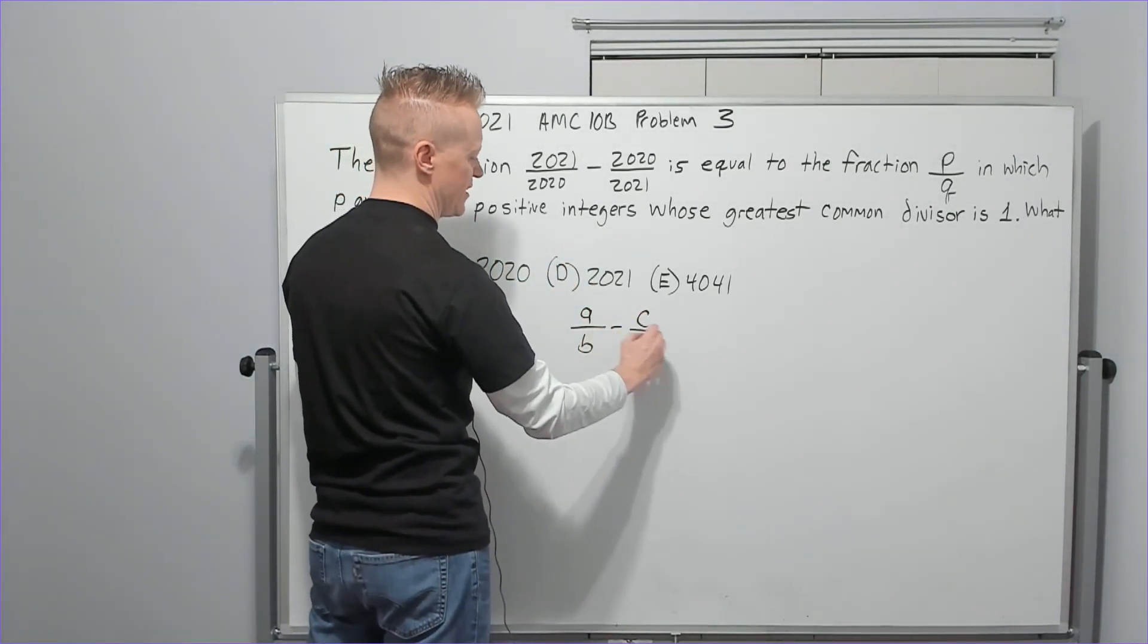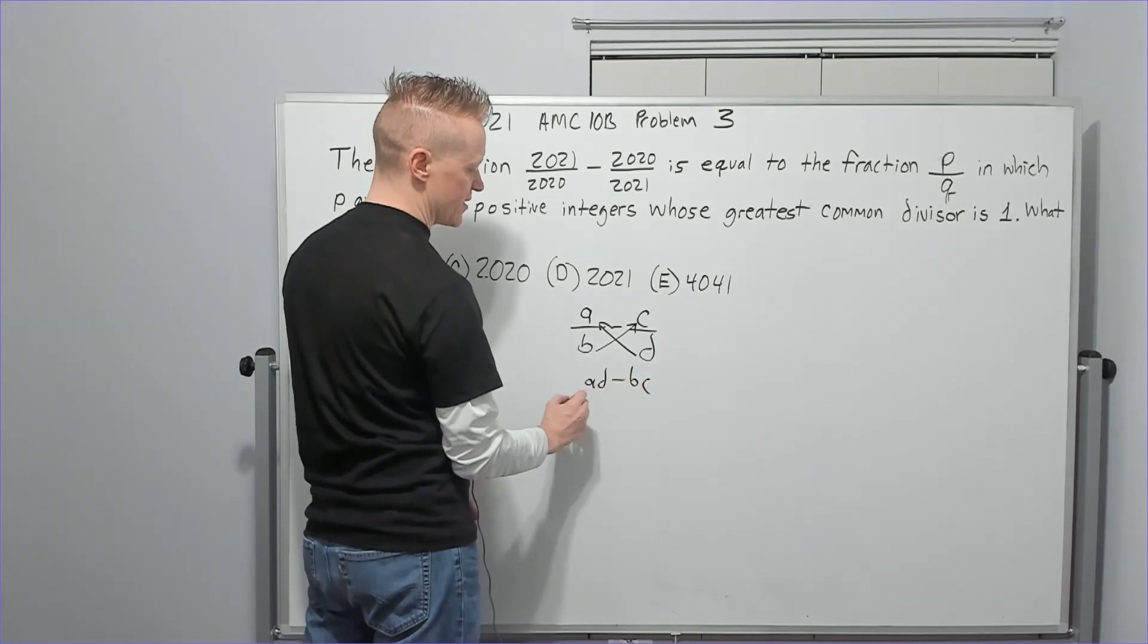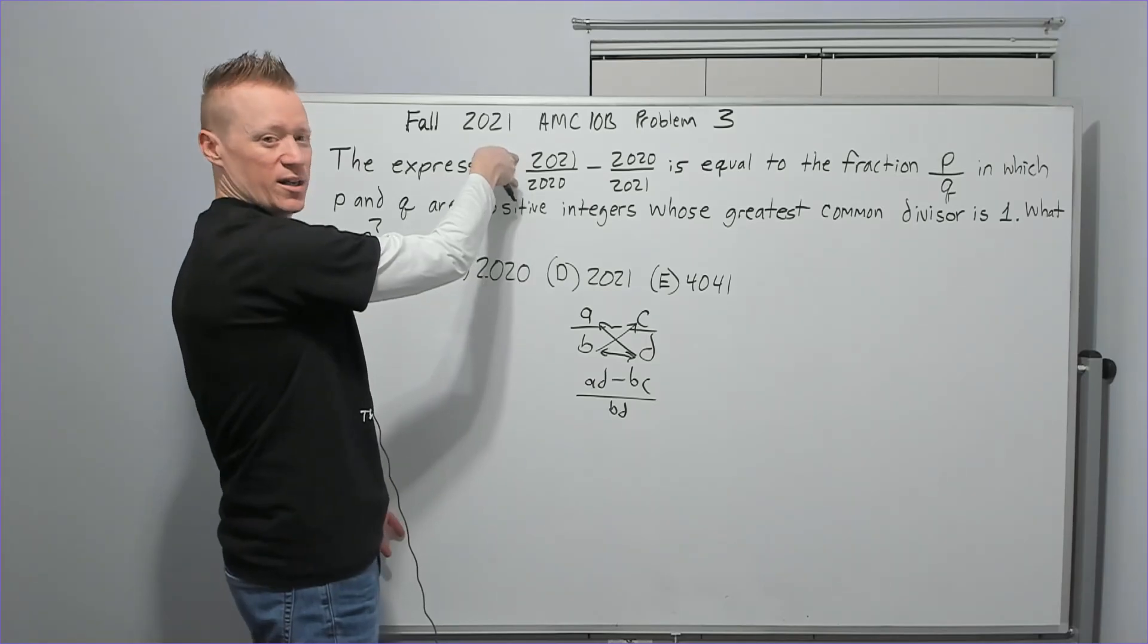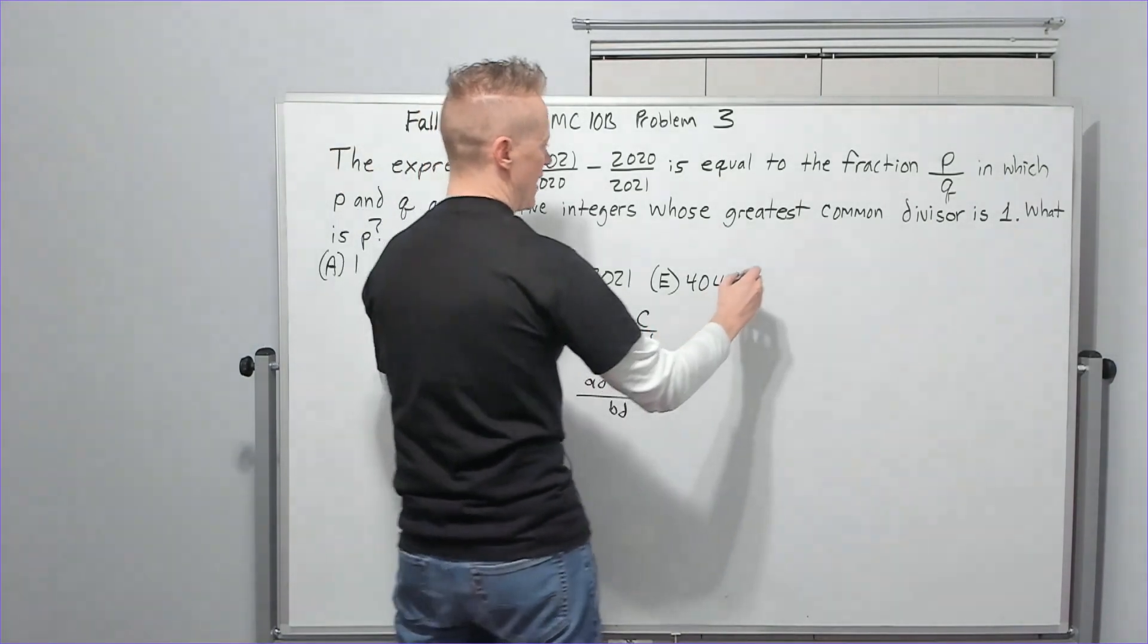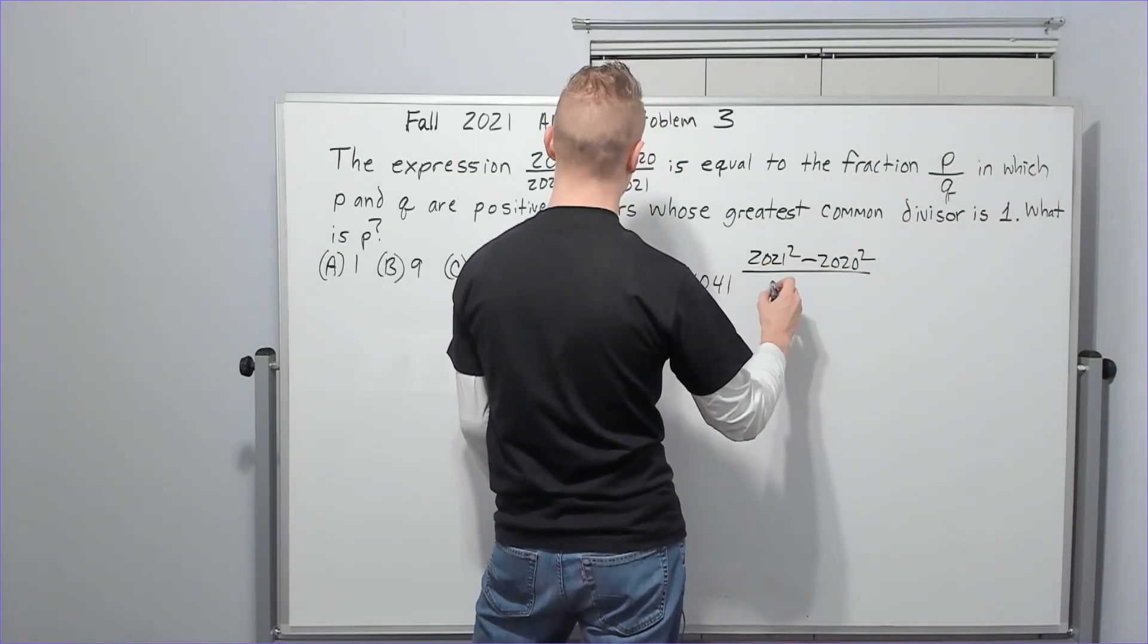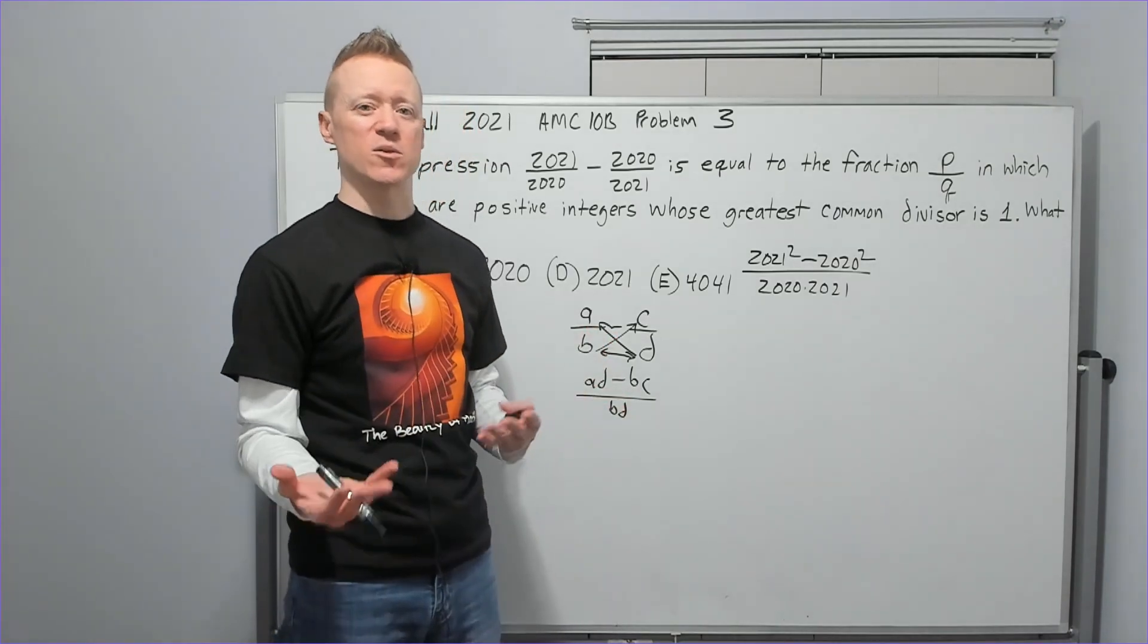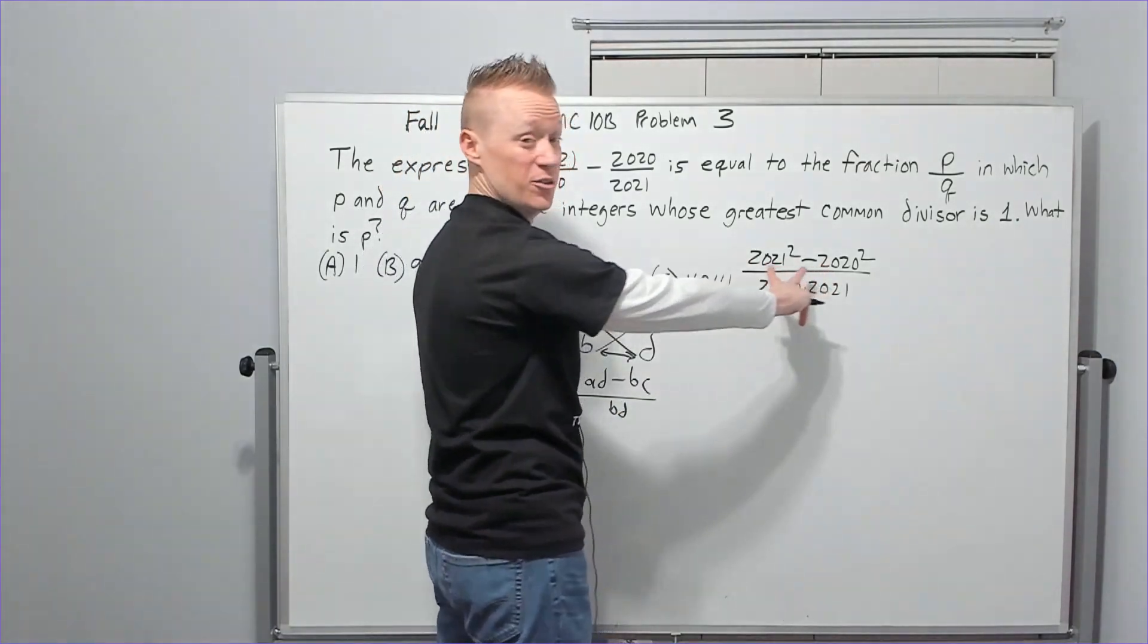The expression 2021/2020 - 2020/2021 is equal to the fraction p/q in which p and q are positive integers whose greatest common divisor is one, a fancy way of saying it doesn't simplify. What is p? If you're subtracting two fractions, you pull the d up to the a to get ad, the b up to the c to get bc, and you multiply the denominators to get bd. You could multiply this by 2021/2021 and this one by 2020/2020 and get the same thing.